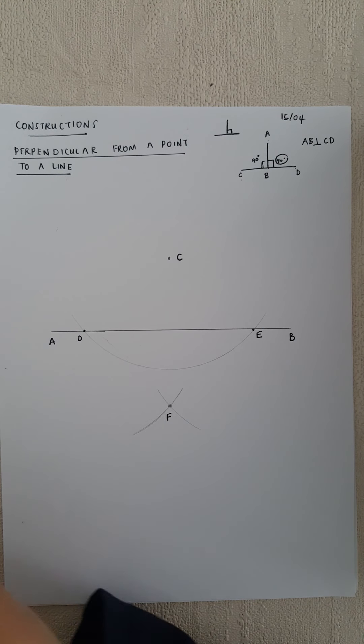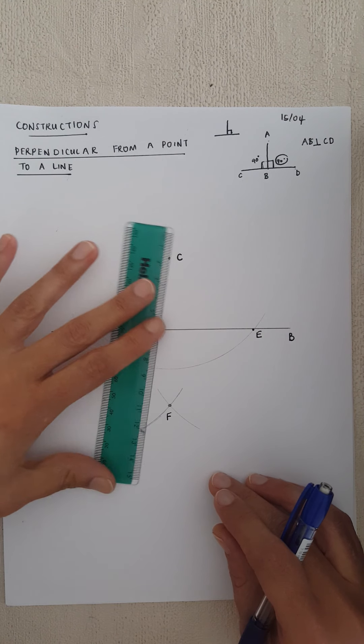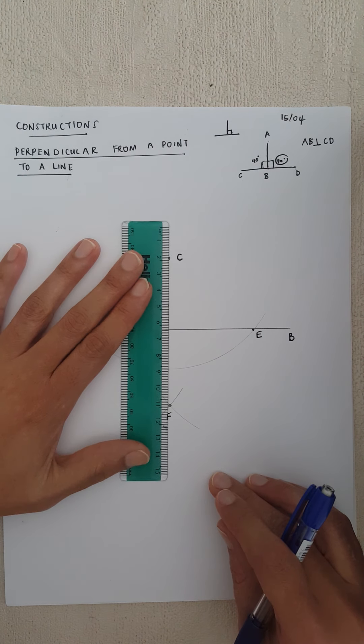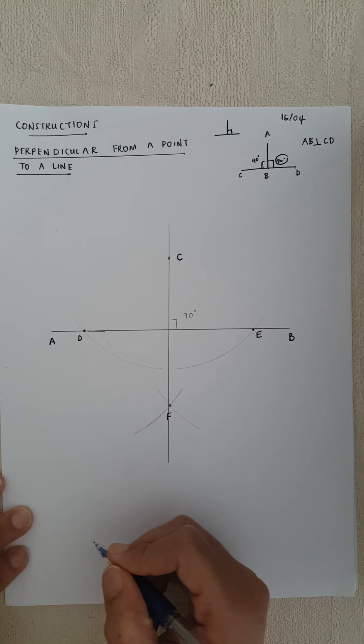I'm going to name this crossing point F. My third step is to join C to F. What I have done is, if I take a protractor and measure this angle here, I need to get 90 degrees — then I know my construction is accurate.